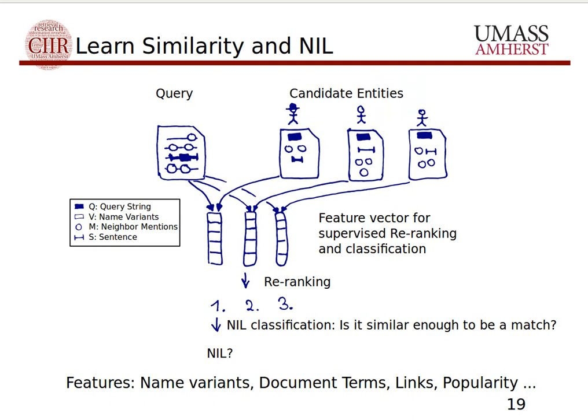Once we've built feature vectors for the query and each candidate entity, we train the machine learning by having known queries with known candidate entities and known true entities. We learn feature weights to maximize situations where the true entity ends up on rank one. During prediction for a new query mention, we compute the feature vectors, apply the learned similarity metric, get a new ranking among candidate entities, and either return whatever entity ends up on rank one, or apply nil classification on top to figure out whether this entity is similar enough to the query mention or whether we should say we don't know.